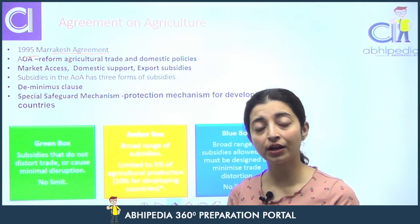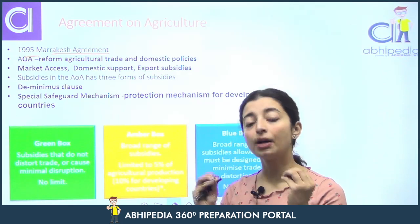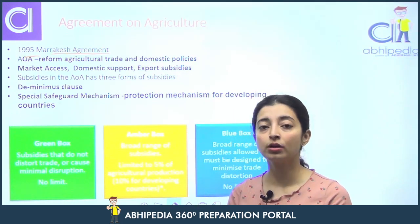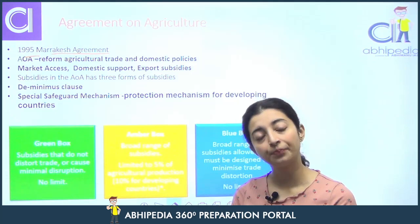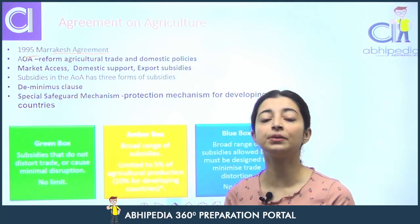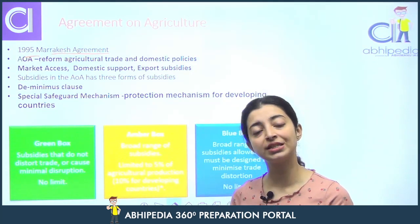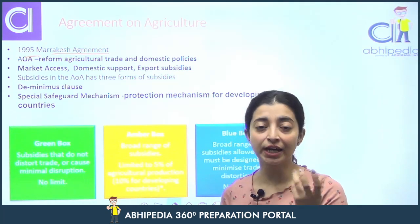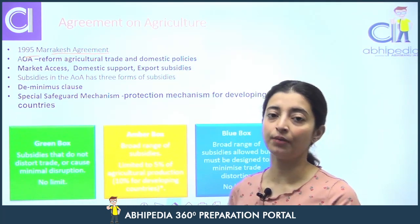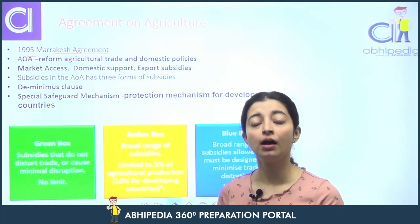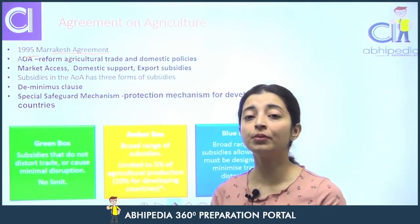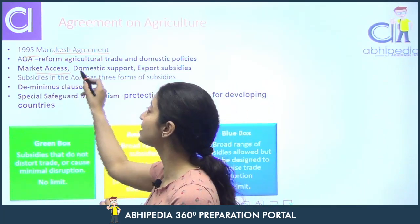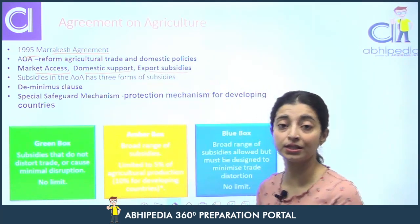Toh Agreement on Agriculture ka purpose kya tha? To promote a freer agricultural trade — agricultural trade mein reforms lane ke liye aur domestic policies mein bhi reforms lane ke liye, taaki global level par jo agricultural trade hai woh fairer ho sake. Agreement on Agriculture rests on 3 broad pillars: market access, domestic support, and export subsidies.